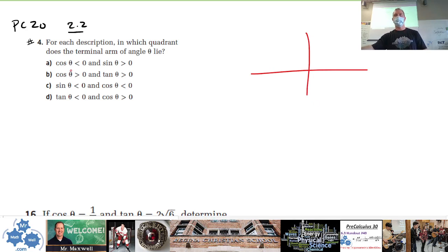So cos is negative here. Okay, so remember our CAST rule. So if cos is negative, that means it could be in either two or three because that's where cos is negative. Here cos is positive. Here all are positive, see that?